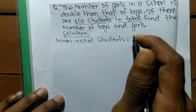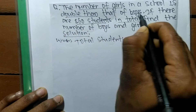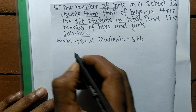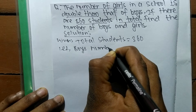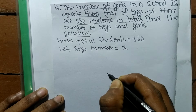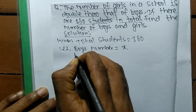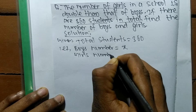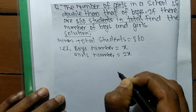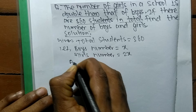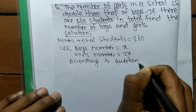The condition given is that the number of girls is double that of boys. For that, we let the number of boys be X. So boys equal X, and then girls in the school are double, so girls become 2X.